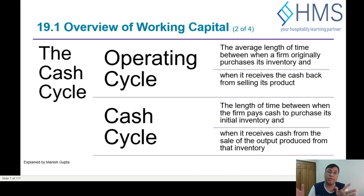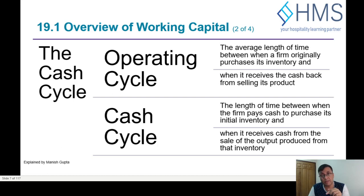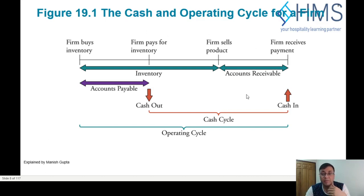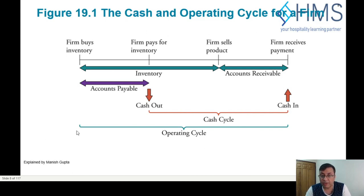The cash cycle is a slightly shorter period — it starts when you pay your suppliers and ends when you receive money from your customers. The difference between the two is the number of days taken to pay the supplier, which is the accounts payable period. If you look at it graphically: the firm buys inventory, pays for it, sells the product, then receives payment. That entire span is the operating cycle; the portion from payment to collection is the cash cycle.